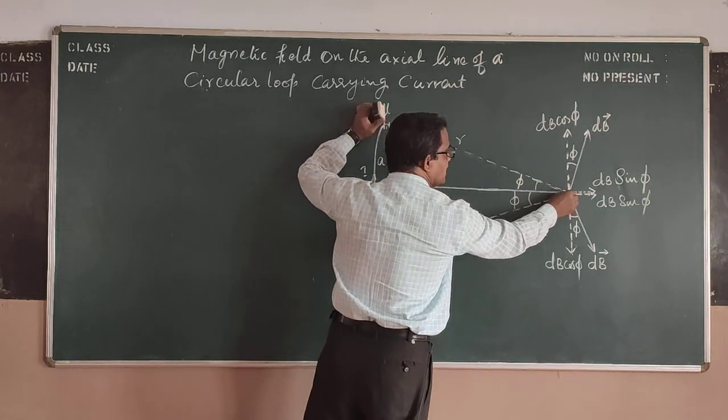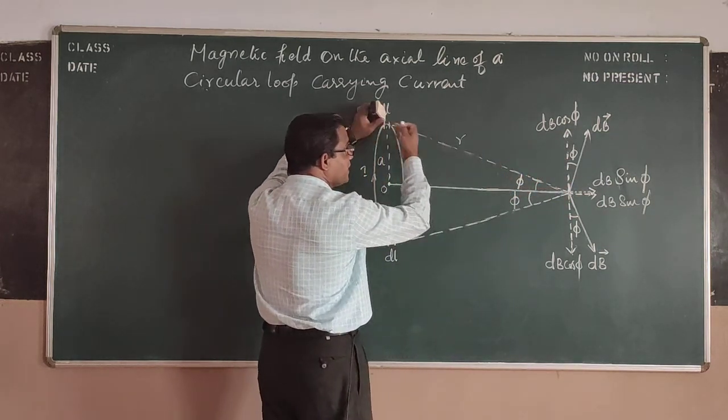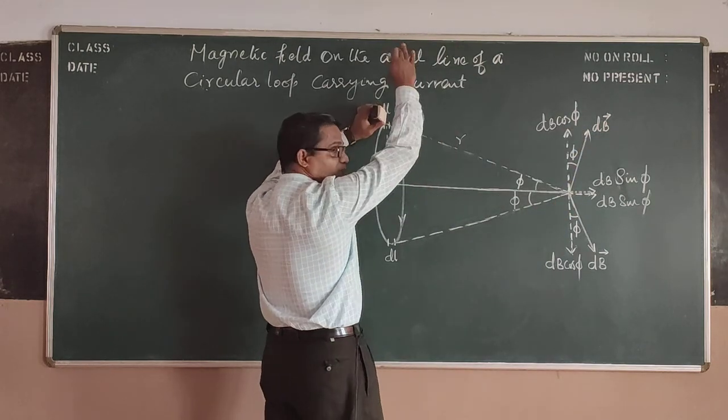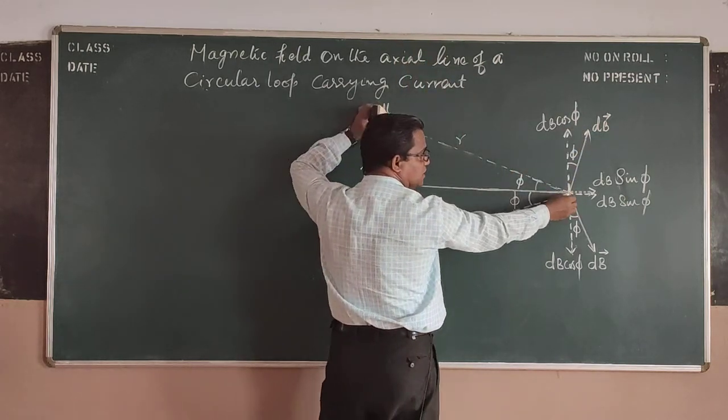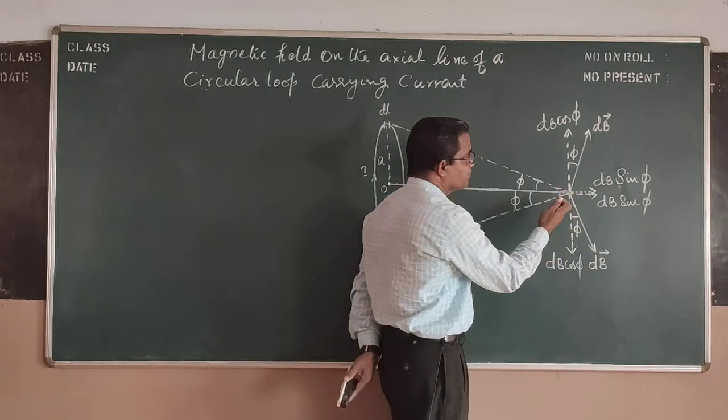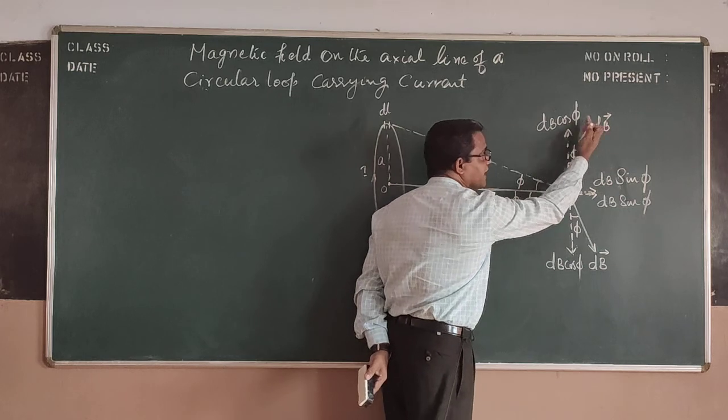At this point, we can consider a circle of radius R and that circle will come around that. So at this point, there will be a very small field DB, which is existing along this particular direction.